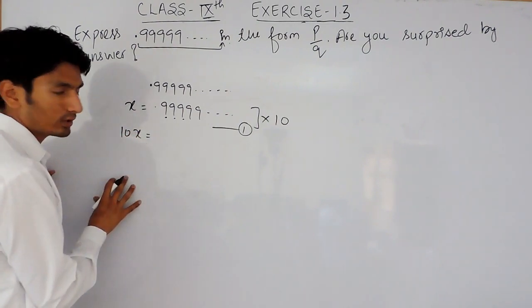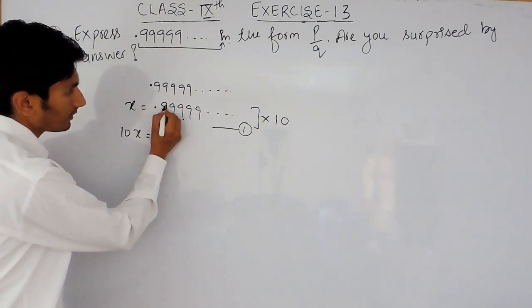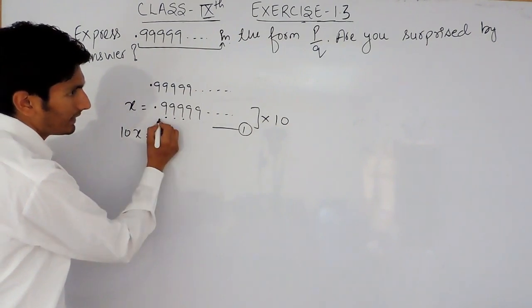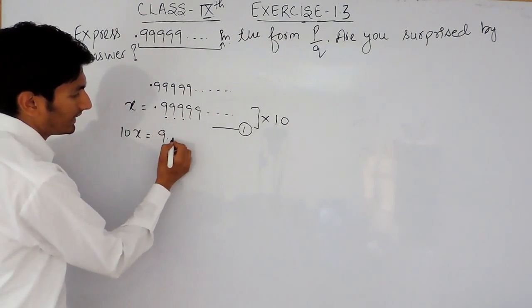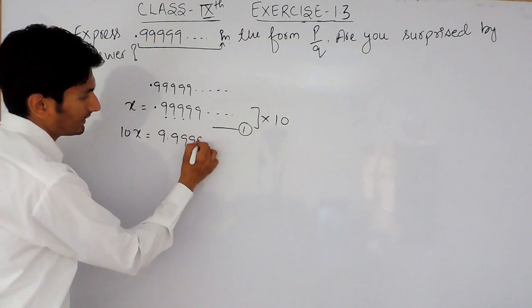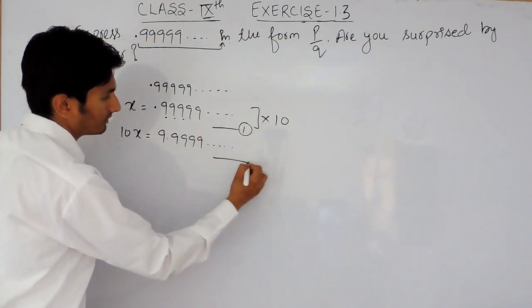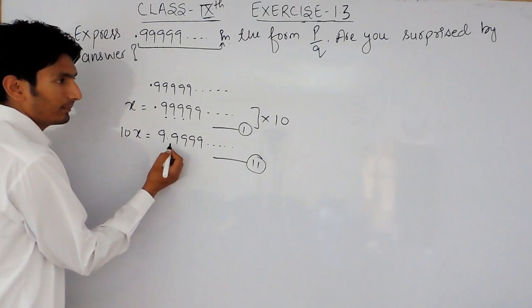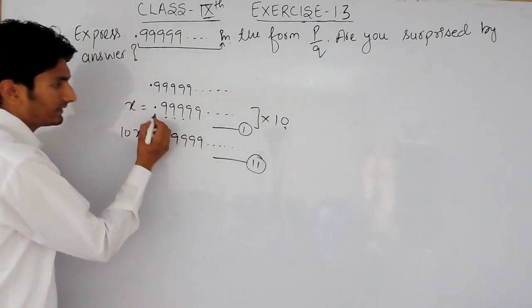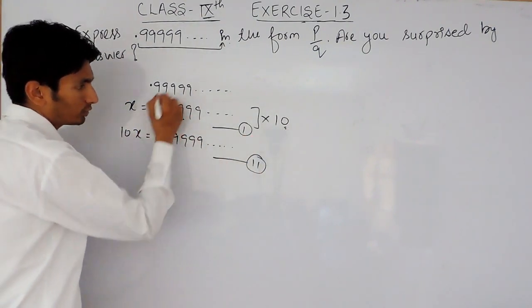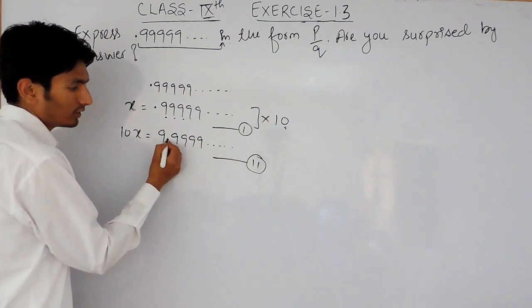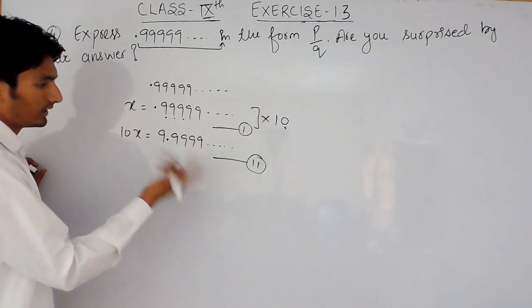So, multiplying this with 10, that will be 10x equals to 9.9999 and so on. This will be our second equation because whenever a number is multiplied by 10, the decimal is shifted to the right hand side by one digit.